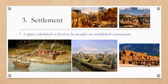Number three: a settlement is a place inhabited or lived in by people, an established community. You can see the Native American settlements and the English settlements. Keep in mind that a settlement is a place — it's somewhere that you can be, somewhere that you can live. It's a community.